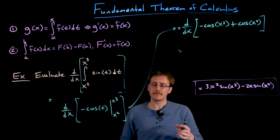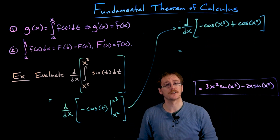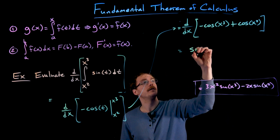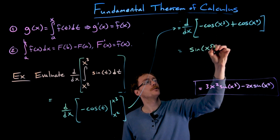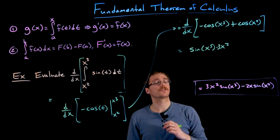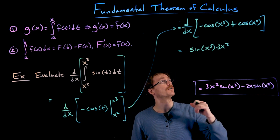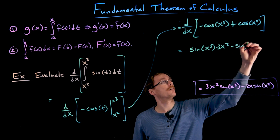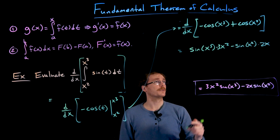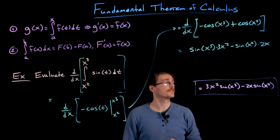If we differentiate negative cosine of x cubed with respect to x, we use the chain rule. The derivative of the outer function negative cosine turns into positive sine, evaluated at the inner function x cubed, multiplied by the derivative of x cubed, which is 3x squared. For the second term, the derivative of cosine of x squared gives us negative sine of x squared times 2x. Reordering, our first term is 3x squared times sine of x cubed and our second term is negative 2x times sine of x squared.